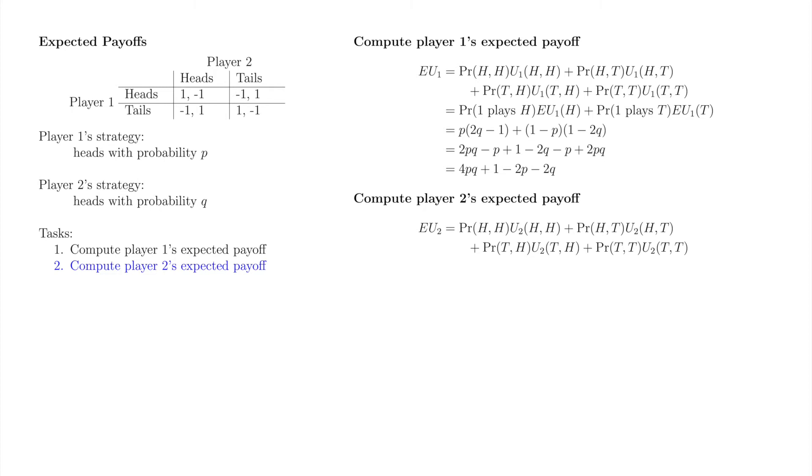As usual, the expectation is the sum of payoffs of each outcome weighted by the associated probability mass function. We can clean this up a bit to the weighted sum of player two's expected payoffs from heads and tails respectively.